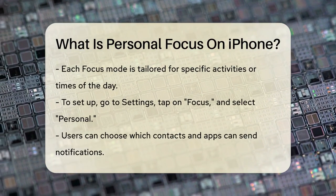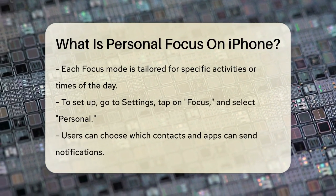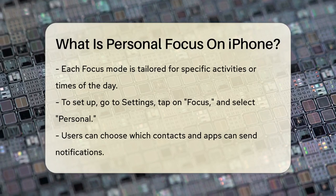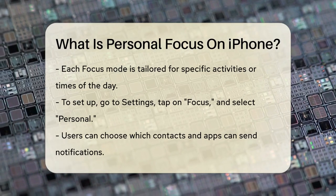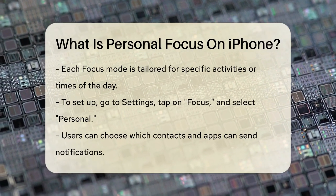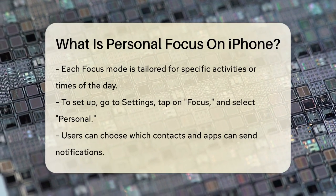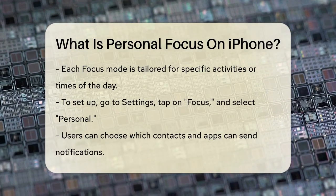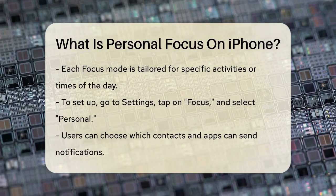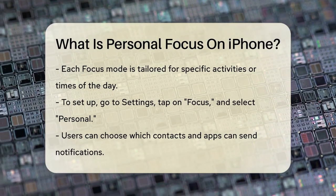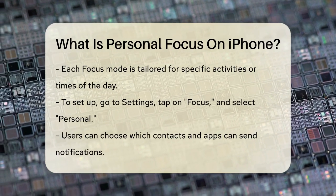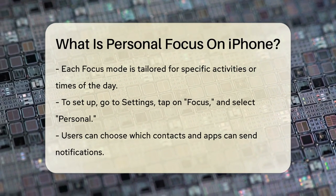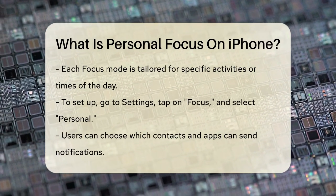To set it up, you simply open the Settings app on your iPhone, tap on Focus, and select Personal from the list of options. From there, you can choose which contacts and apps can send you notifications, silence notifications from everyone else, and even customize your home screen to show only the essential apps and widgets.